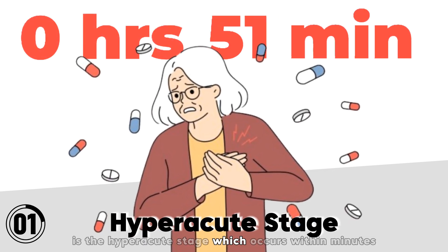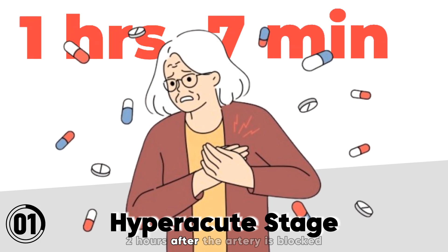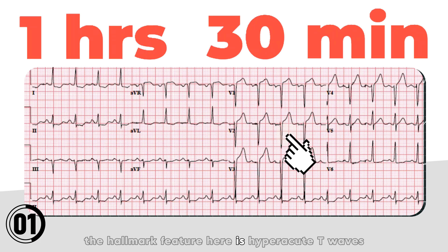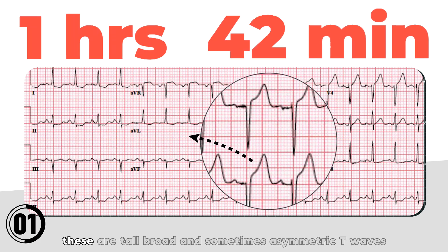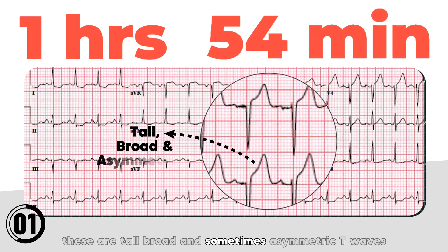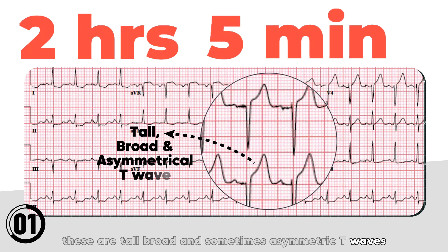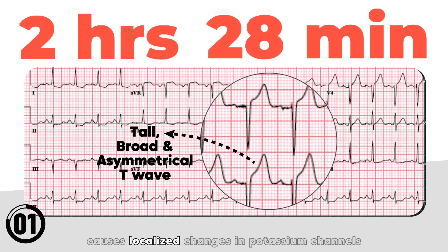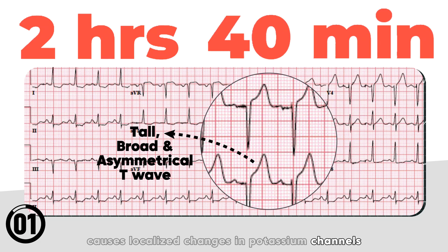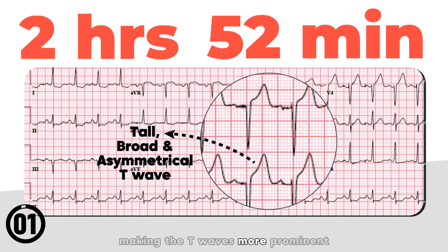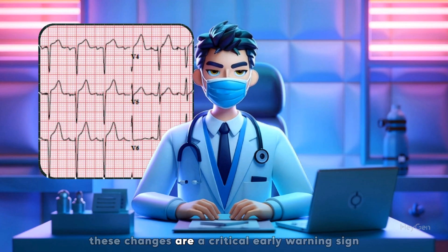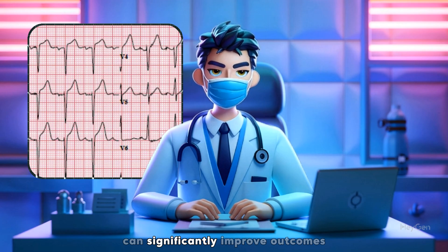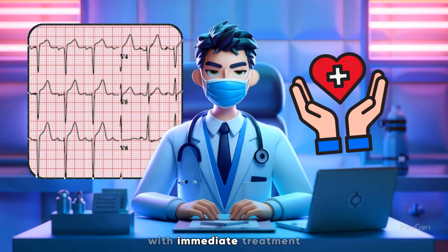The first stage of a myocardial infarction is the hyperacute stage, which occurs within minutes to hours after the artery is blocked. The hallmark feature here is hyperacute T waves — tall, broad, and sometimes asymmetric. They occur because ischemia, or oxygen deprivation, causes localized changes in potassium channels, making the T waves more prominent. These changes are a critical early warning sign, and catching this stage early can significantly improve outcomes with immediate treatment.